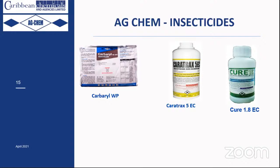Carbaryl is a broad-spectrum product that can be used as a drench, foliar, or in powdered form. It is very effective in controlling aphids, whitefly, thrips, leaf miners, and worms. For high infestation, combining a contact solution with a systemic insecticide is recommended, as different modes of action will not interfere with each other.